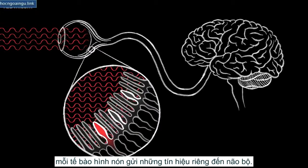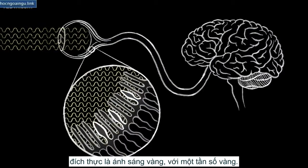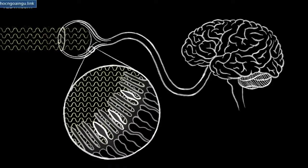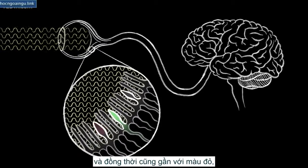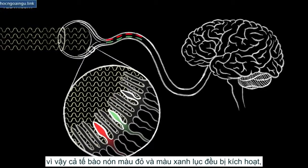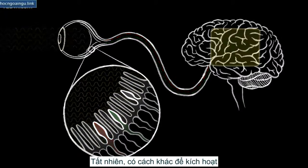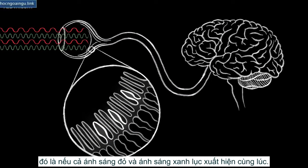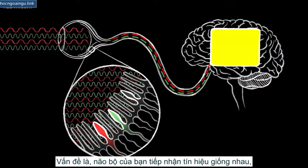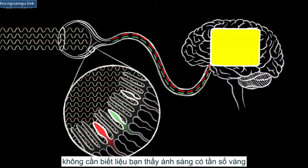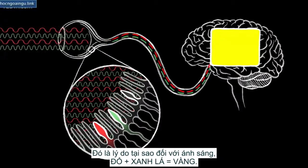When you see a color, each cone sends its own distinct signal to your brain. For example, suppose that yellow light — that is, real yellow light with a yellow frequency — is shining on your eye. You don't have a cone specifically for detecting yellow, but yellow is kind of close to green and also kind of close to red, so both the red and green cones get activated and each sends a signal to your brain saying so. Of course, there's another way to activate the red cones and the green cones simultaneously: if both red light and green light are present at the same time. The point is, your brain receives the same signal regardless of whether you see light that has the yellow frequency or light that is a mixture of the green and red frequencies. That's why, for light, red plus green equals yellow.